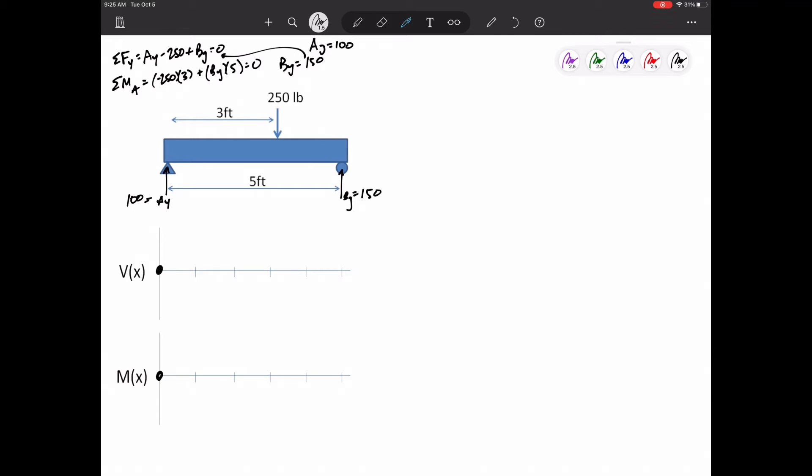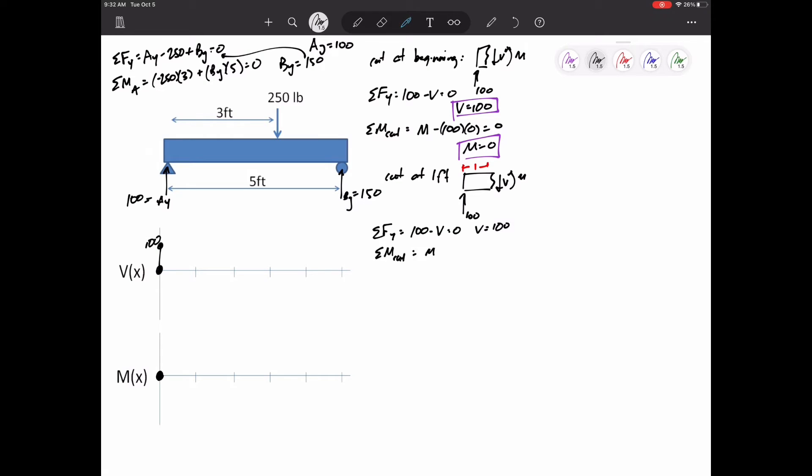Then we could cut it. Now, I'm going to play this in quadruple speed because this is not what we're going to want to do. This is the hard version by cutting it at every location and solving for the internal V and the internal M. But it all goes back to the sum of the forces is equal to zero and the sum of the moments is equal to zero.